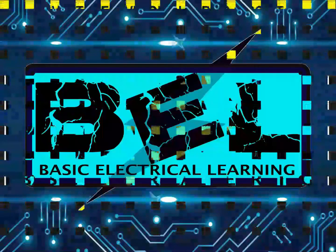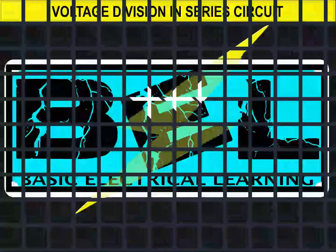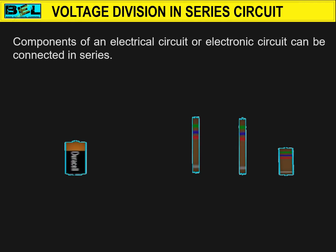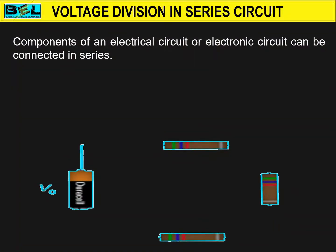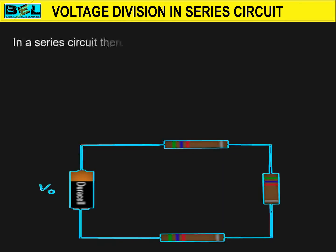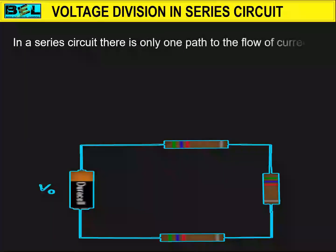Basic electrical circuit. Components of an electrical circuit or electronic circuit can be connected in series. Before we study about voltage in a series circuit, first of all we must know what is a series circuit. In a series circuit there is only one path to the flow of current.